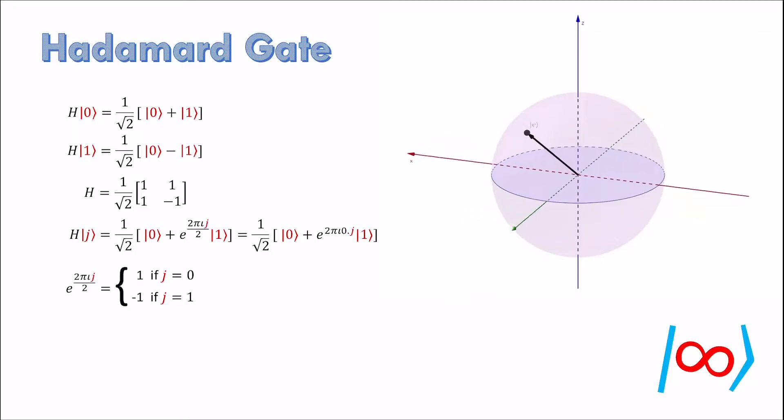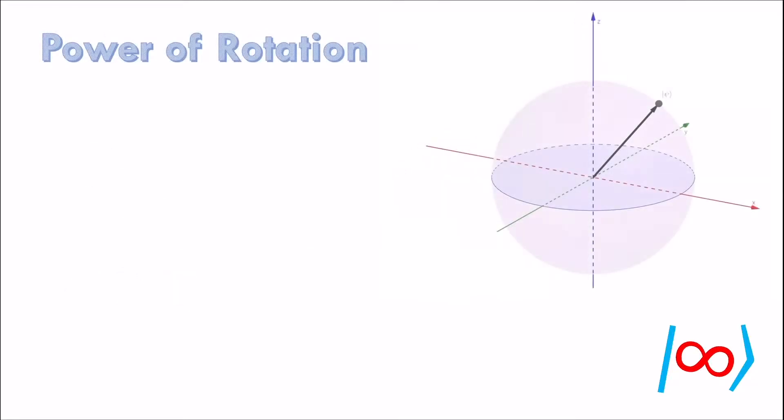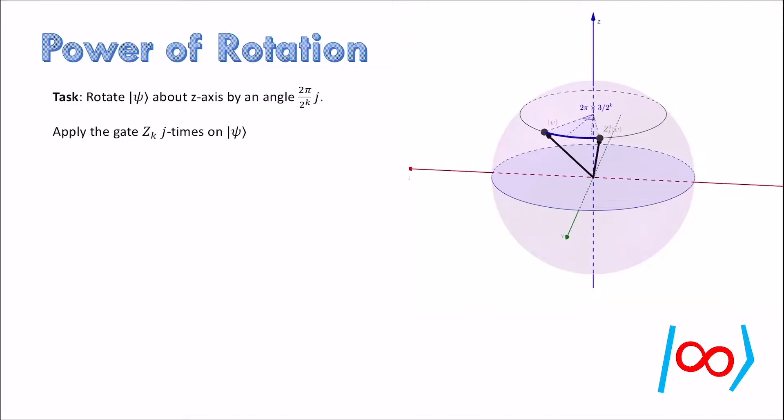Suppose we want to rotate a state about z-axis by an angle 2 pi by 2 power k times j. This can be achieved by repeatedly applying Z_k gate j times. But this method is not efficient or practical when j is a large number like 2 power 100. It would simply take too long to finish the process. There is a clever work around this problem, but comes at a design cost.